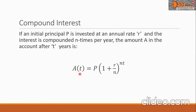A as a function of T equals P — the principal — multiplied by the quantity 1 plus the fraction R over N, where R is the rate and N is the number of times the interest is compounded per year. This binomial is raised to the exponent N times T, where T is the number of years.